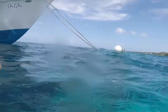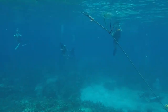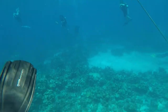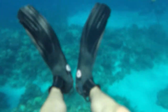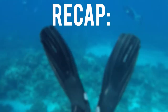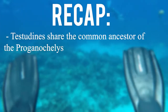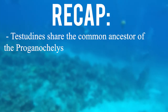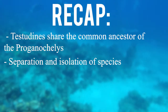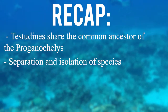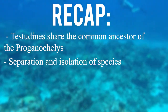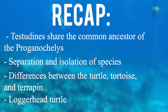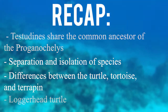Turtles, terrapins, and tortoises — so similar yet so different at the same time. Let's recap some of the things we covered in this video. First, we learned that all Testudines share the same ancestor, the Proganocheles. We also briefly covered how the separation and isolation of species created new ones. Next, we went into the differences between the turtle, tortoise, and terrapin. And finally, we spoke briefly about the loggerhead turtle and the differences within the turtle genus.